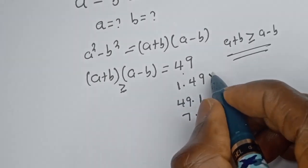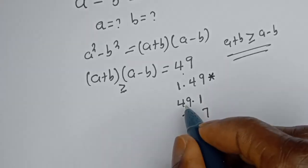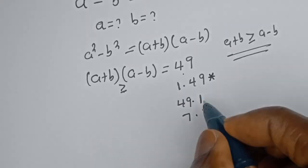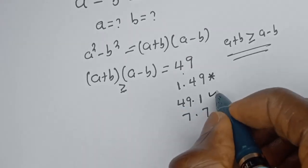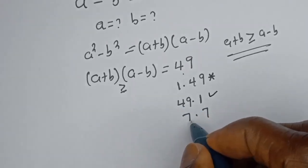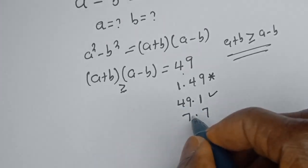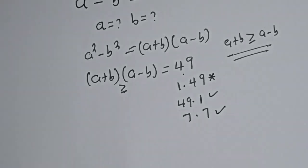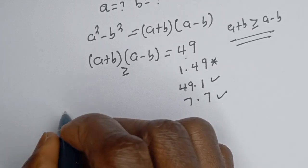Since 1 is less than 49, the case 1×49 is cancelled. So 49 multiplied by 1 is valid since 49 is greater than 1, and 7 multiplied by 7 is also valid since both are equal.